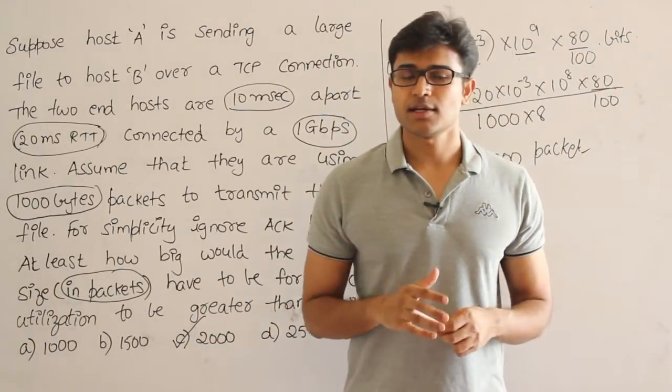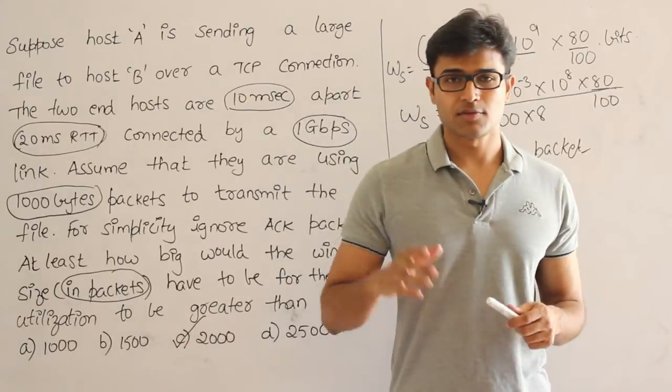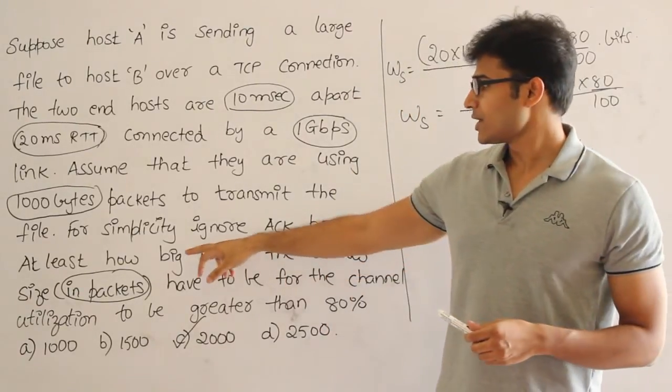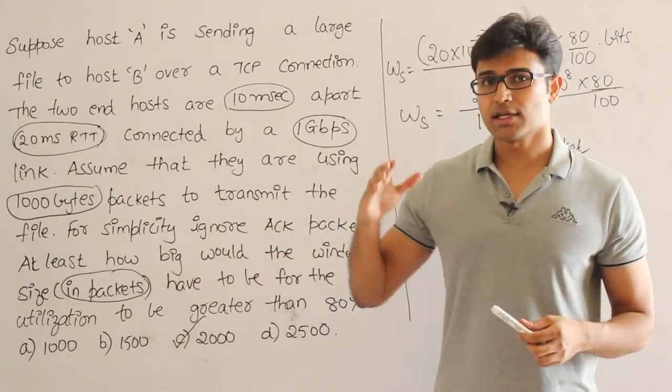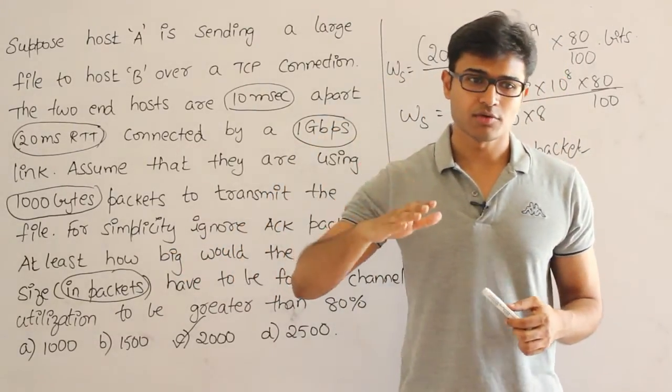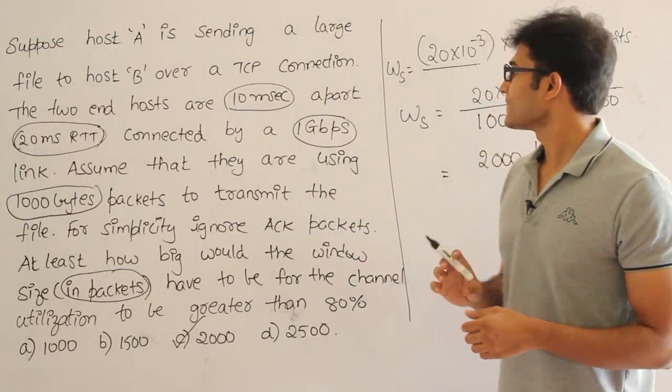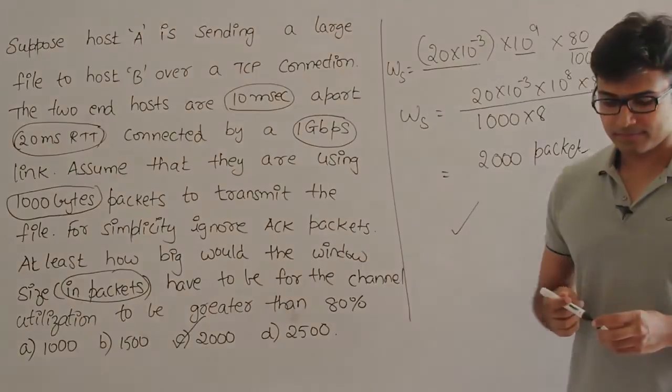If it is 2000 packets exactly we are going to get 80% utilization. If it is more than 2000 packets we get more than 80%. The question is at least how big, which means they are asking minimum. So minimum is 2000 and beyond that anything is fine. So the answer is 2000 packets. You do the same.